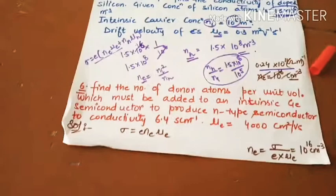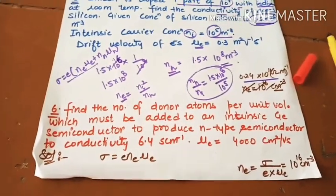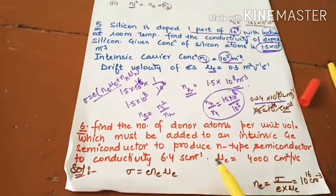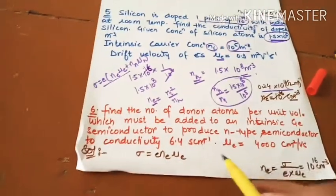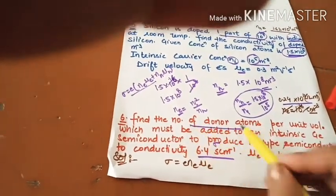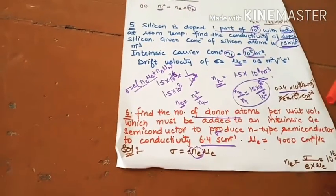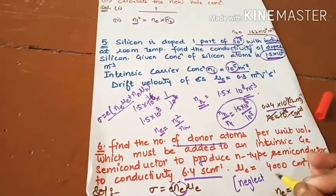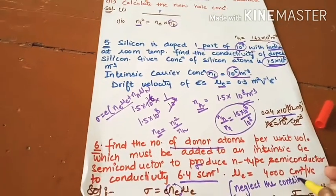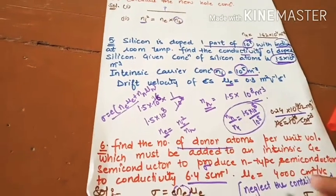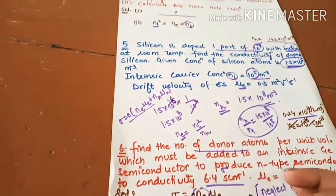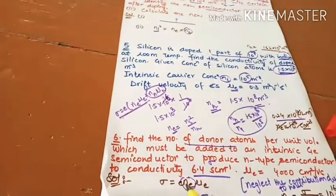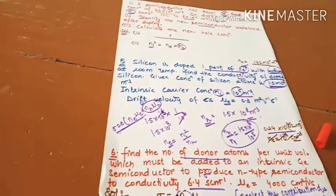Next one is also important: Find the number of donor atoms per unit volume which must be added to an intrinsic germanium semiconductor to produce the given conductivity. You can neglect the contribution due to holes. Sigma is equal to e Ne mu e plus Nh mu h. Neglecting holes, sigma equals e Ne mu e.